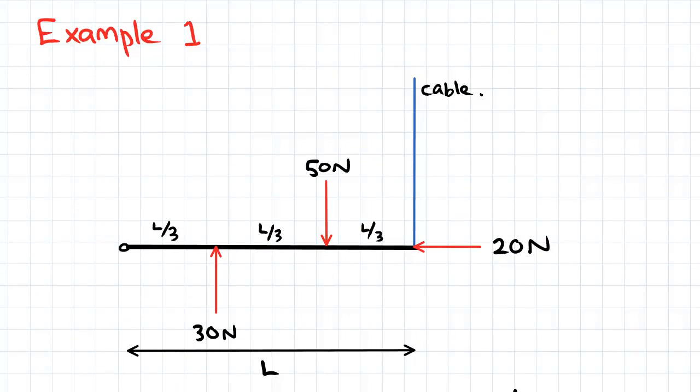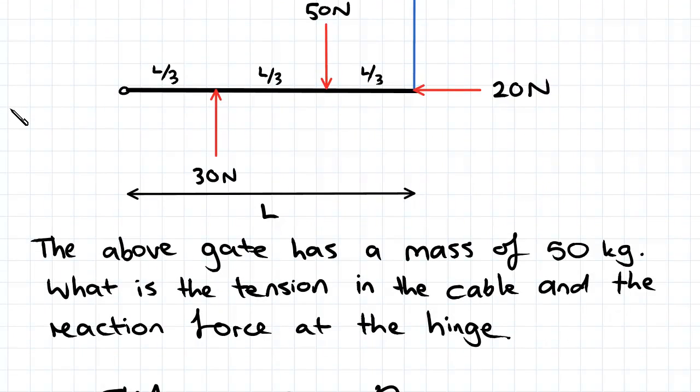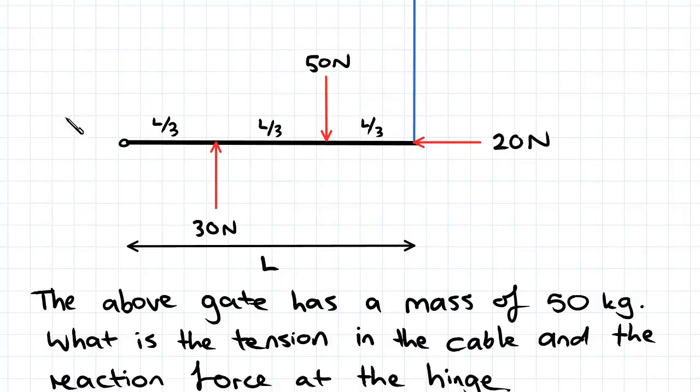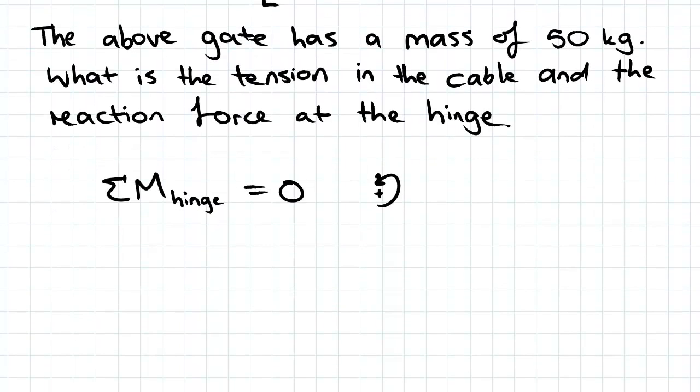Here we've got a gate with a mass of 50 kilograms. We've been asked to find the tension in the cable and the reaction force at the hinge. This is our cable here, we've got forces acting on it in both the x and y directions, and we've been given the dimensions as necessary. Hinges can resist vertical and horizontal forces but not moments.